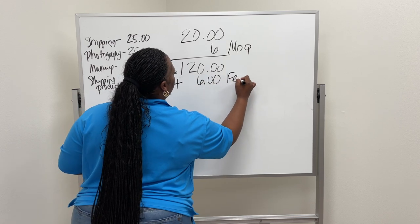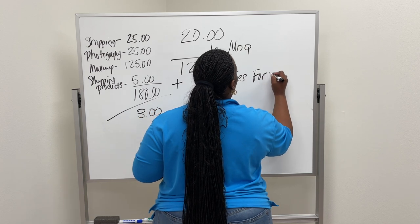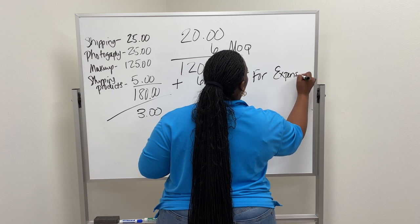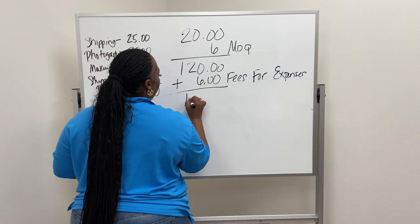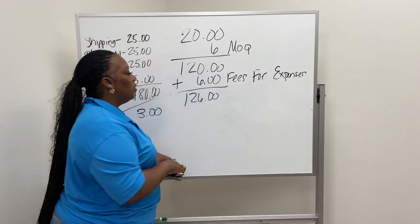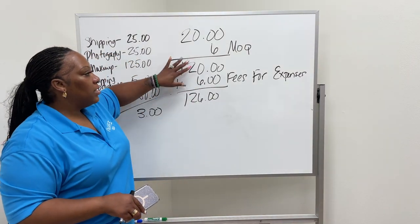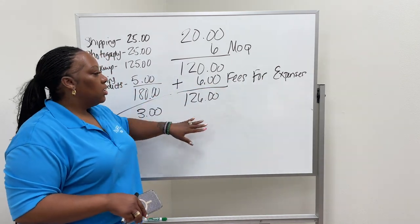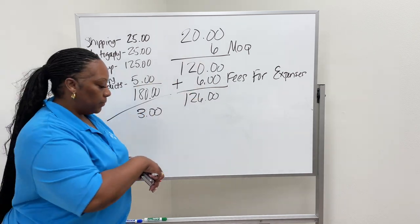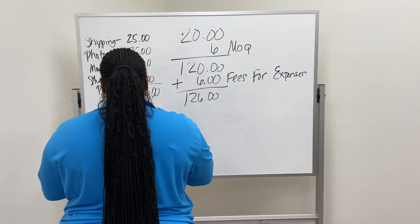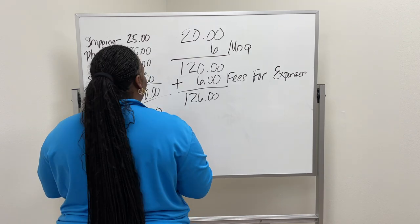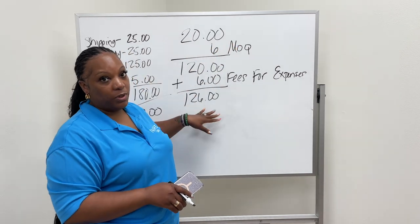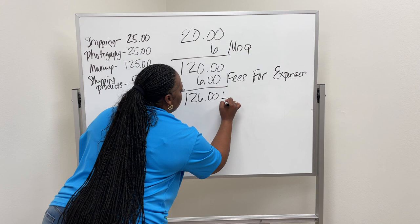So this is the fees for the business. So that comes up to $126. So when you want to price your item, we're not going to price it at the $120 because we've added everything for the expenses, we're going to price it at $126. So we're going to take 126 and we're going to divide it by six. So that's $21. So then your cost goes from $20 to $21.